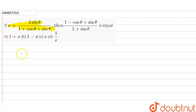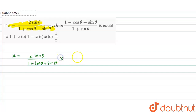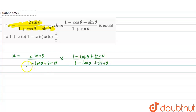So now, x is equal to 2 sin theta divided by 1 plus cos theta plus sin theta. Now multiplying and dividing by 1 minus cos theta plus sin theta divided by 1 minus cos theta plus sin theta.